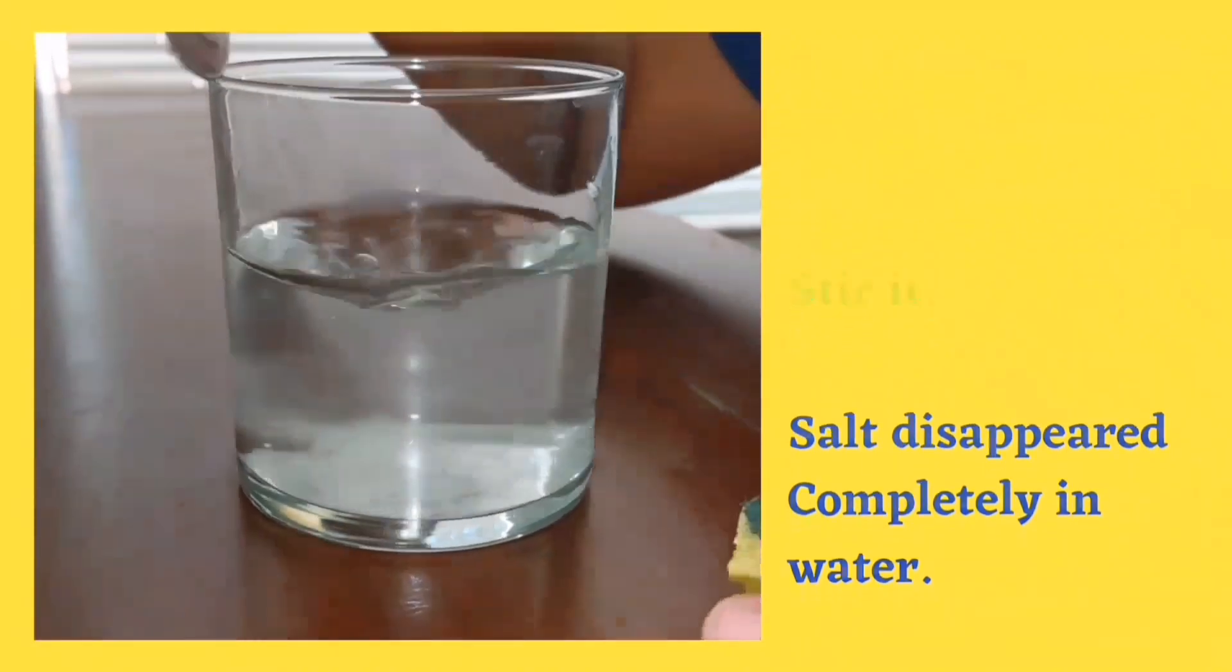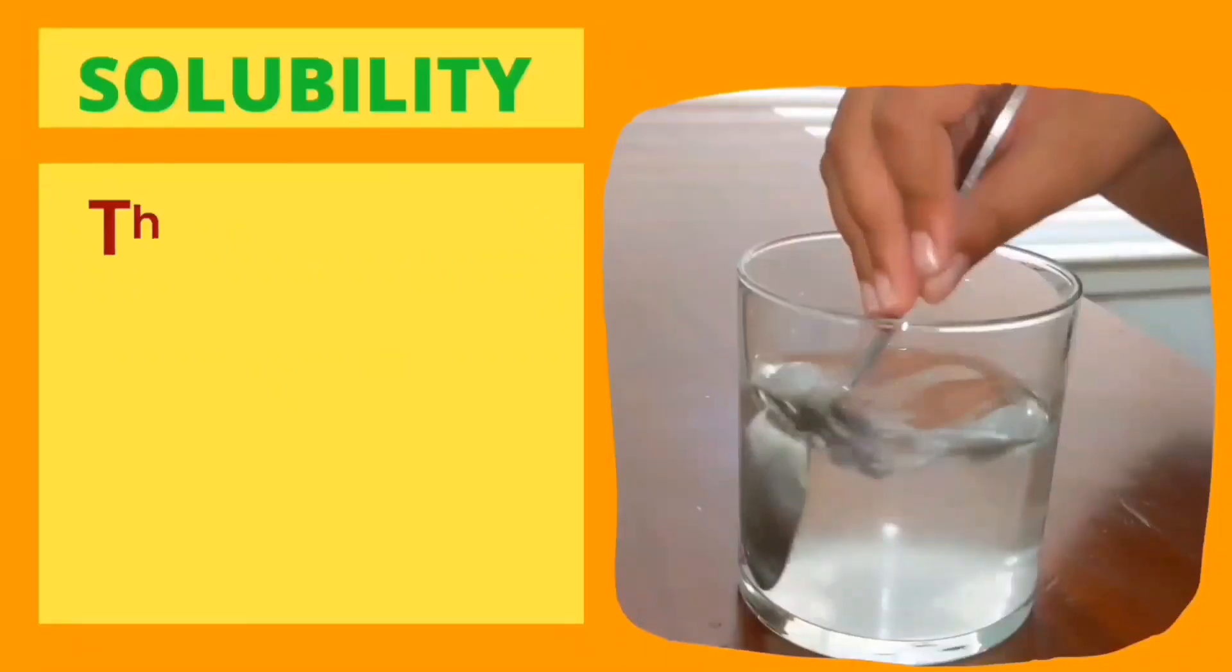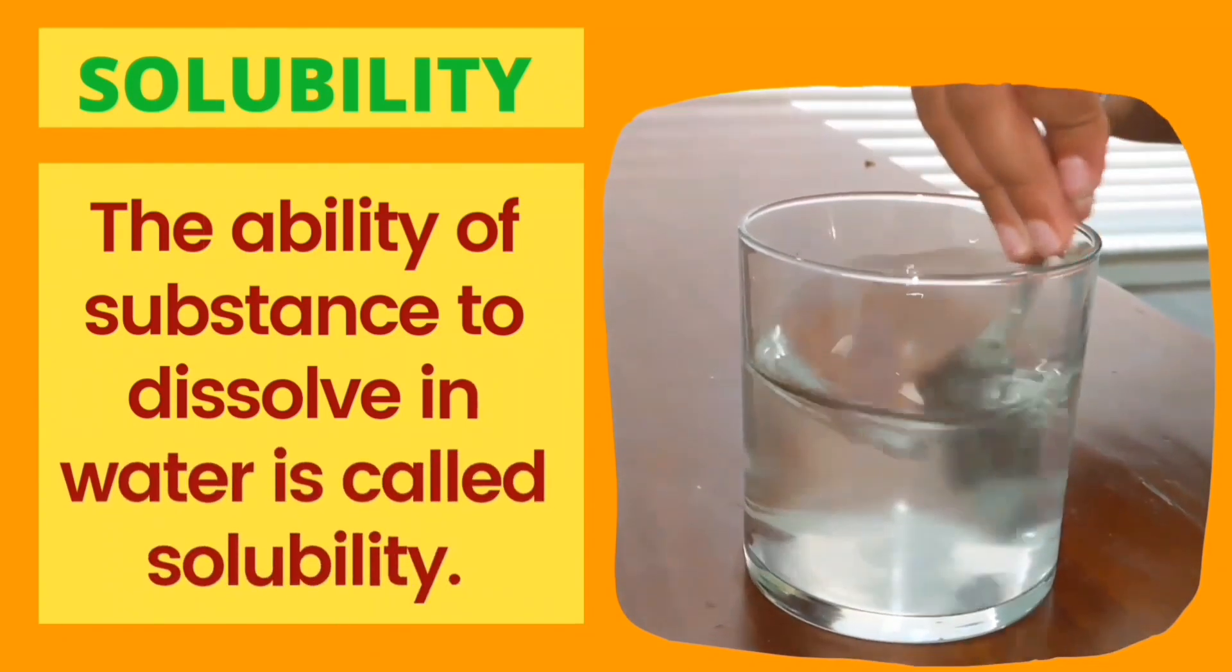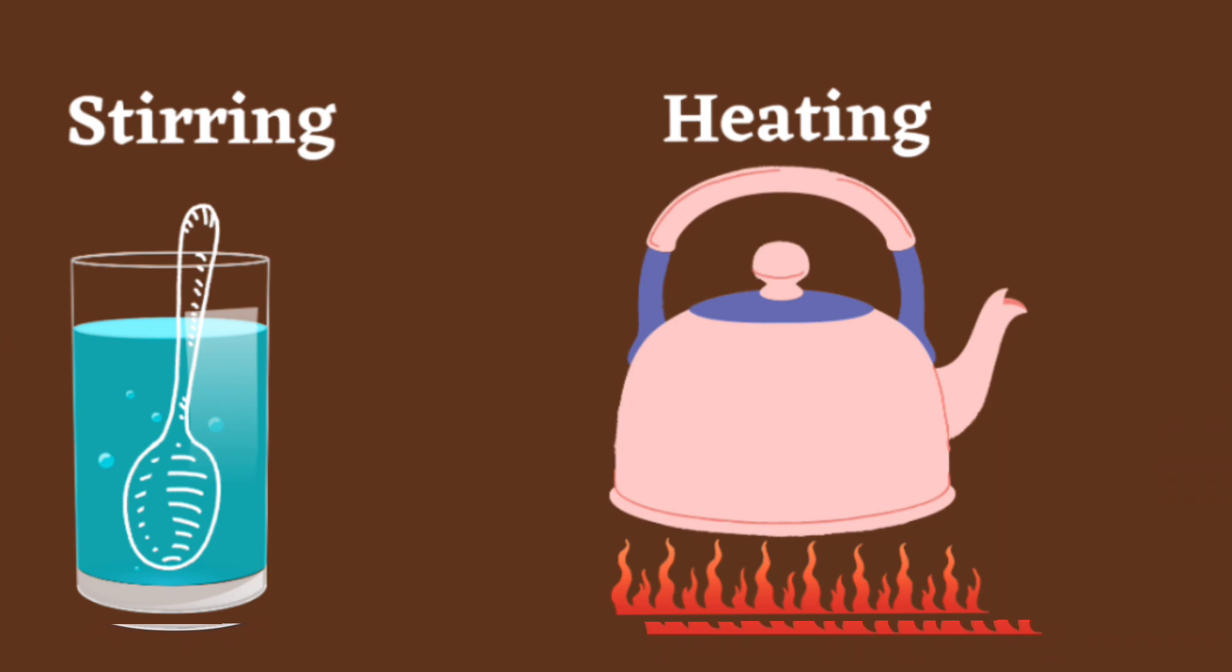Not all substances dissolve in water, like soil and chalk powder. The ability of a substance to dissolve in water is called solubility. The solubility of a substance can be increased by stirring or by heating the solution.